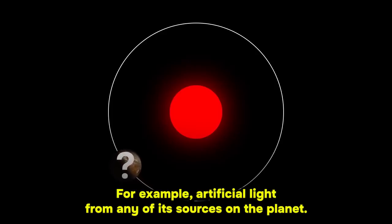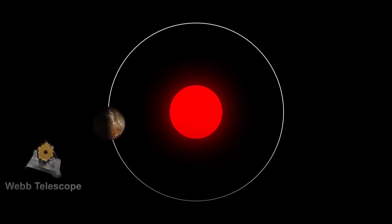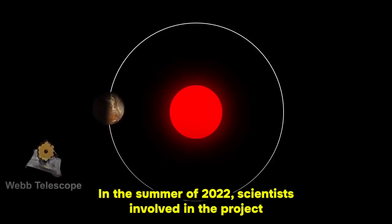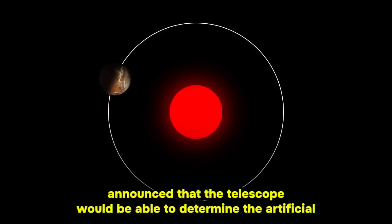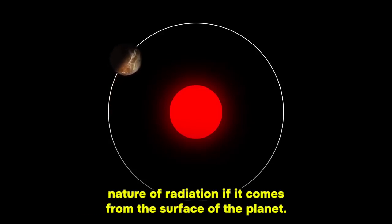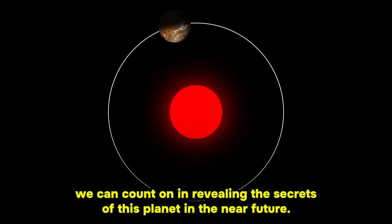For example, artificial light from any of its sources on the planet. But this is where the Webb Telescope will come into play. In the summer of 2022, scientists involved in the project announced that the telescope would be able to determine the artificial nature of radiation if it comes from the surface of the planet. So, it is the work of the powerful and productive Webb Telescope that we can count on in revealing the secrets of this planet in the near future.